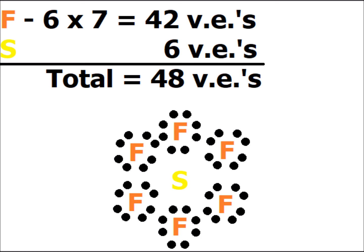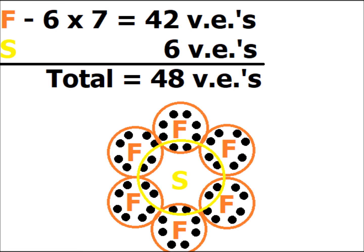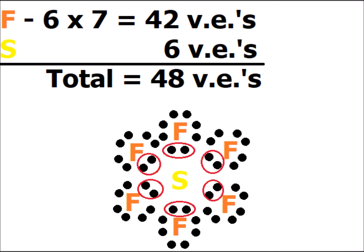Next, we have sulfur hexafluoride, SF6. Each fluorine atom has 7 valence electrons; the central sulfur atom has 6 valence electrons, thereby giving a total of 48 valence electrons for this molecule. We see that each fluorine satisfies the octet rule, and that sulfur expands the octet with a total of 12 electrons — valid because sulfur is in the third row of the periodic table. The central sulfur atom has a total of six bonding pairs surrounding it, therefore it has six electron domains.